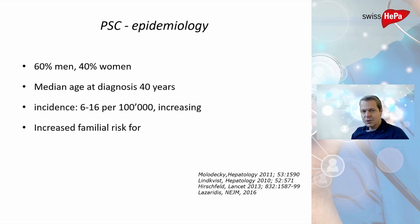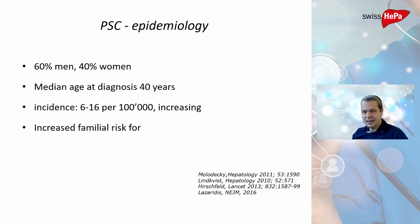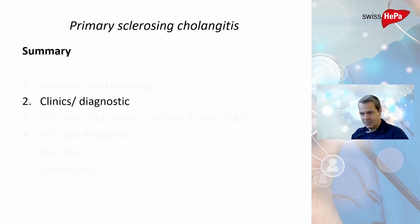A little more men are affected than women — 60 percent men, 40 percent women. The median age at diagnosis is 40 years. The incidence is about 6 to 16 per 100,000 inhabitants, and at the moment the incidence is increasing. Increased family risk is also known, so if PSC is in the family, you have a higher risk of developing it.